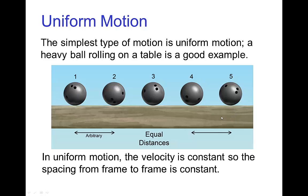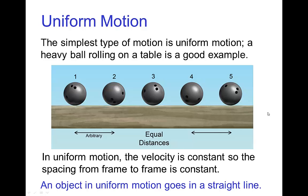In uniform motion, besides the speed being constant, we also have that the object is traveling in a straight line. For right now we'll mostly concentrate on the spacing being the same spacing from frame to frame, or from key to key.